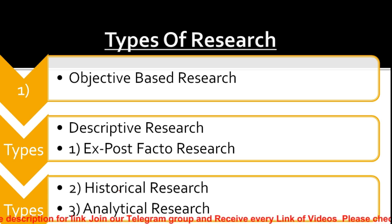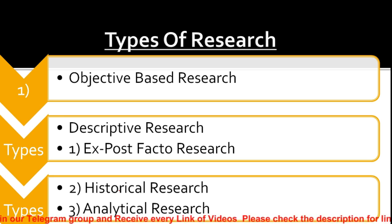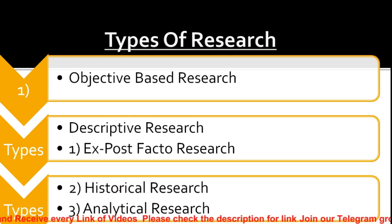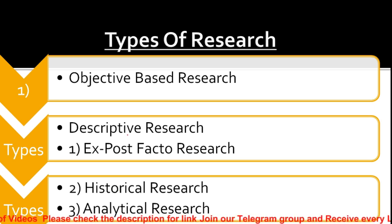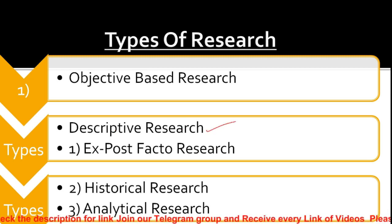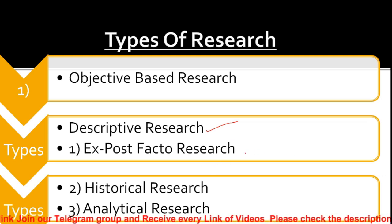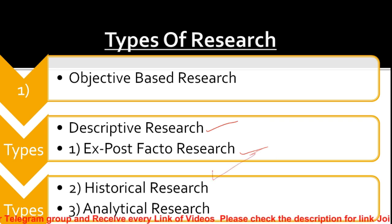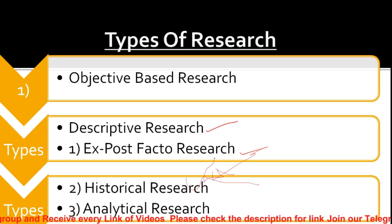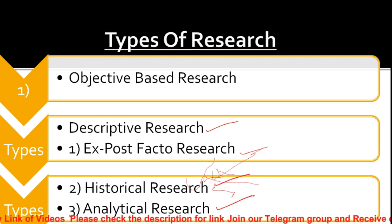Number one is types of research on the basis of objective - objective-based research. Under objective-based research we have: descriptive, correlational, explanatory, exploratory, and experimental. Descriptive research itself covers three points: ex-post facto research, historical research, and analytical research.